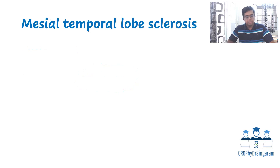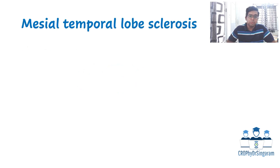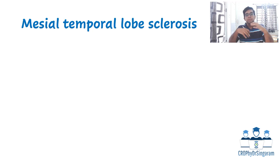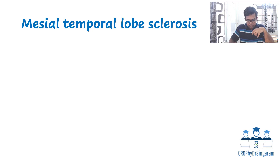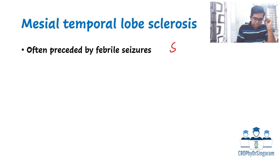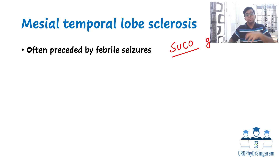The next condition is mesial temporal lobe sclerosis. The peculiarity of this condition is that it occurs following febrile seizures in childhood — it is often preceded by repeated febrile seizures. Some cases can also have a genetic origin; specifically, a psychogene mutation has been implicated in this condition, which is a potential exam question.